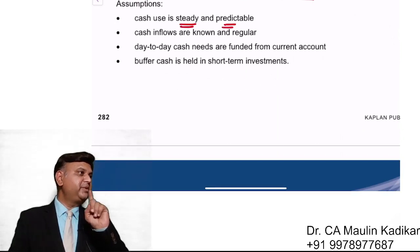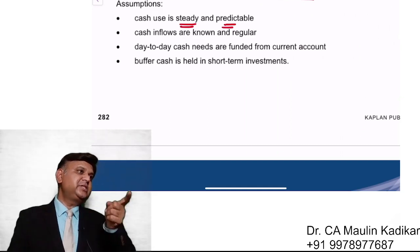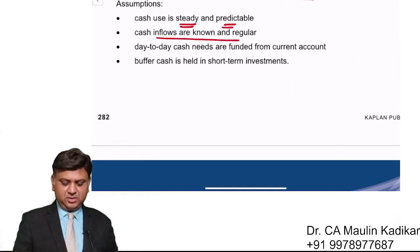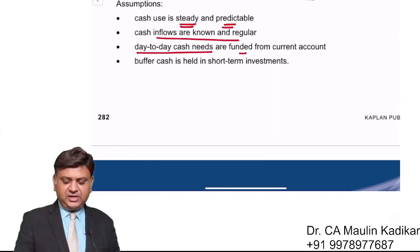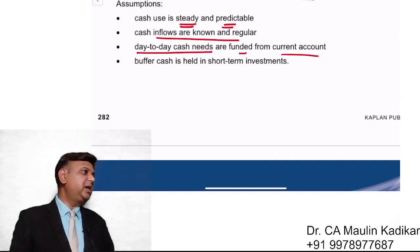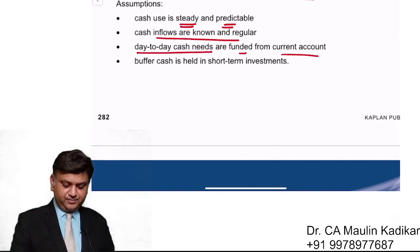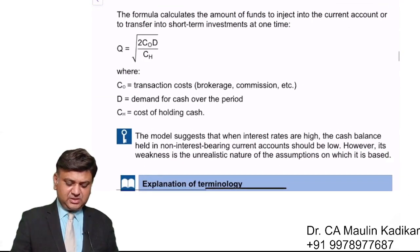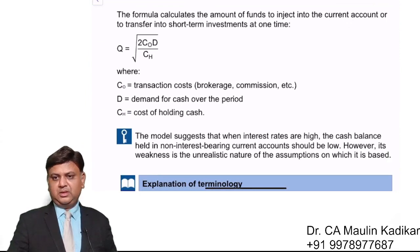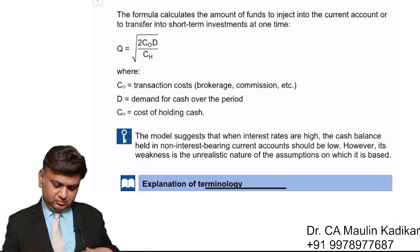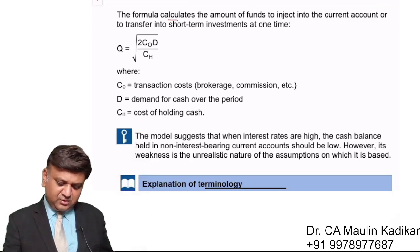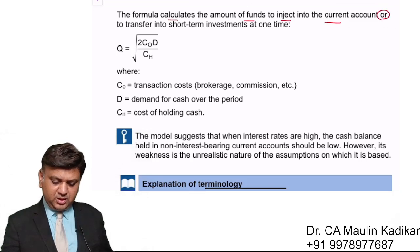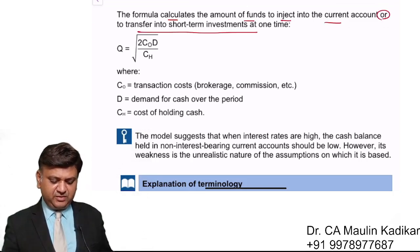Baumol developed a model based on EOQ assumptions: cash is used steadily and predictably, meaning expenses are evenly spent and we can predict total annual expenditure at the beginning of the year. Cash inflows are known and regular. Day-to-day needs are funded from the current account, on which no interest is earned, while excess funds are held in short-term investments. The formula calculates the amount of funds to inject into the current account or transfer into short-term investments at one time.